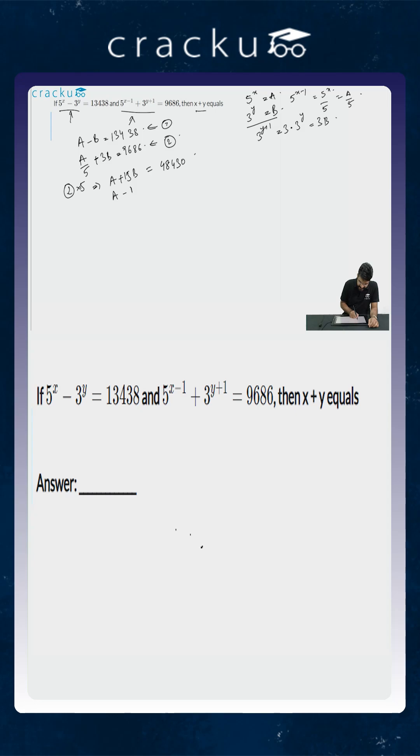And from the first equation we know that a minus b is equal to 13438. So if you just subtract the second equation from the first equation, you can cancel a out. So this will be 16b is equal to 34992. Now, so b will equal 34992 by 16. Again, you can use your calculator, this will equal 2187.